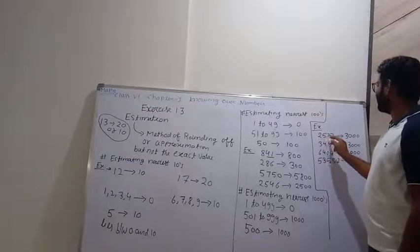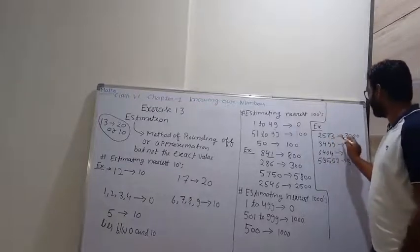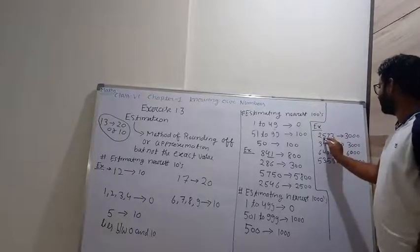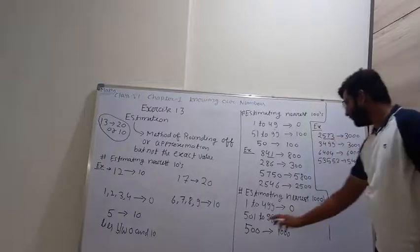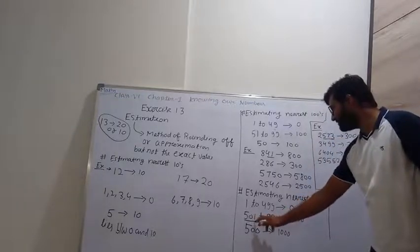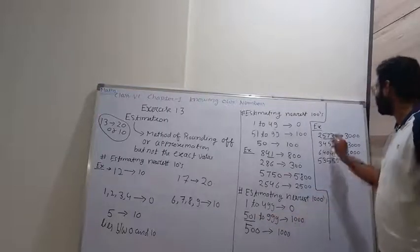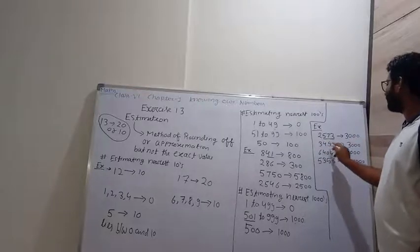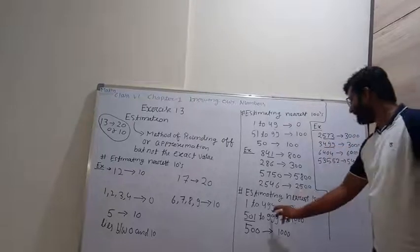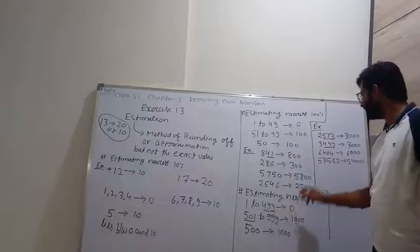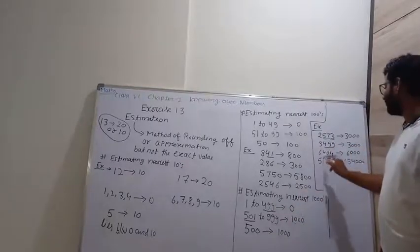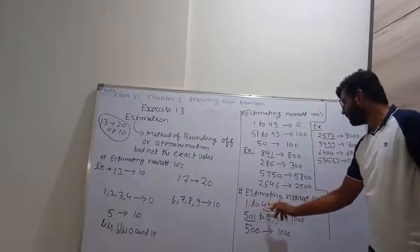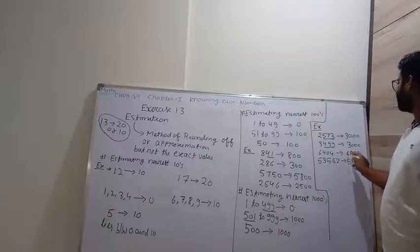For example, 2,573 is converted as 3000, because 573 lies between 501 to 999, which is treated as 1000. And 3,499: here 499 is less than 499, so it becomes 3000. And 600,404: here 404 lies between 1 to 449, so it becomes 6000.